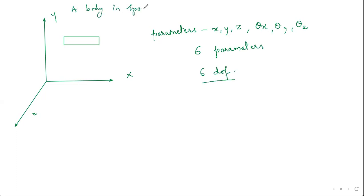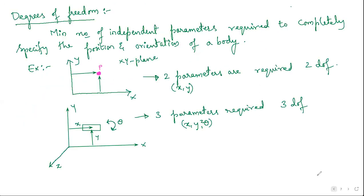So, a body in space has a maximum of six degrees of freedom, and a body in a plane has a maximum of three degrees of freedom. It might be less than three, but not greater than three — maximum three.